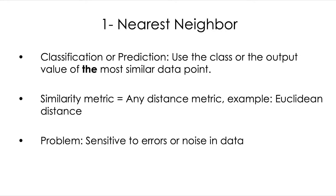In the case of one nearest neighbor, we classify a new data point by considering the class value of the most similar data point. We find the nearest neighbor and use its class to predict the class of a new data point. For regression, we look at the output value of the most similar data point and use that value to predict the output of our new data point.